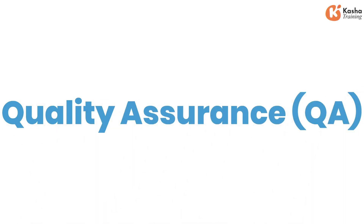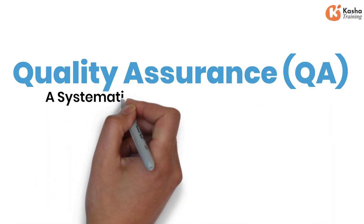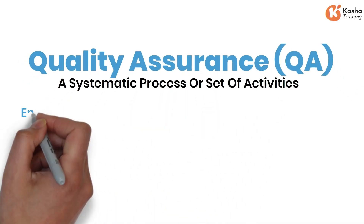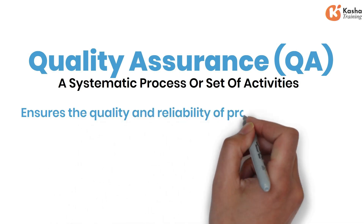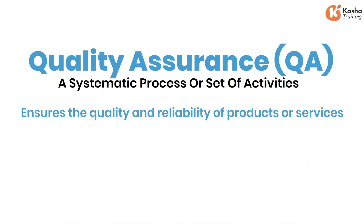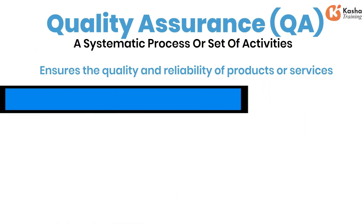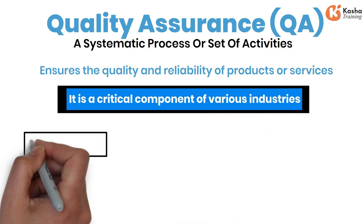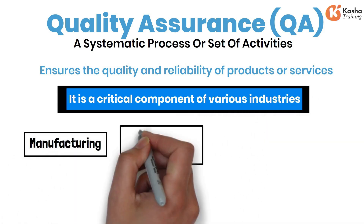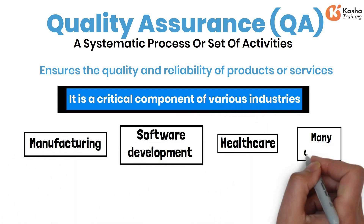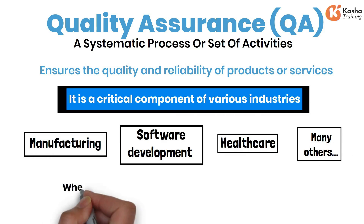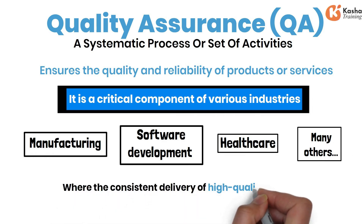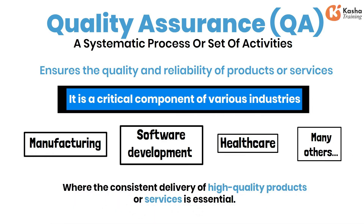Quality Assurance, QA, is a systematic process or set of activities that ensures the quality and reliability of products or services. It is a critical component of various industries, including manufacturing, software development, healthcare, and many others, where the consistent delivery of high-quality products or services is essential.